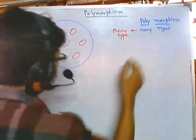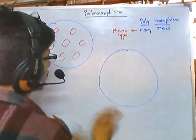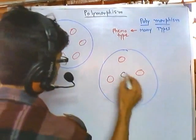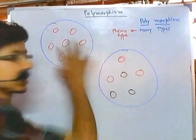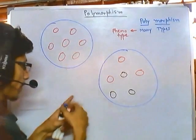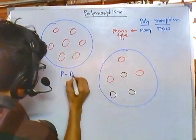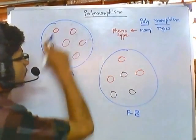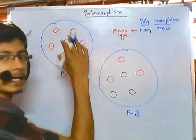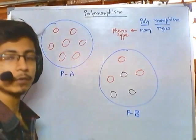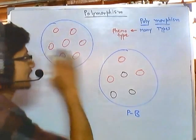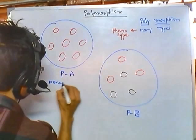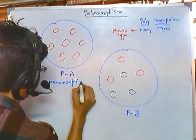Let me draw another population — this one. This population, let's say, is population B. Now in population A, all the individuals have the same characteristics — same physical characteristics, same morphology, all the same phenotypic expressions. So we can say that all of the members here are monomorphic in nature.